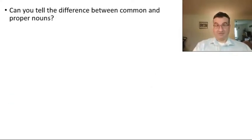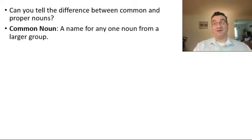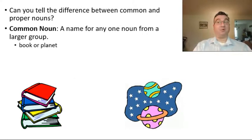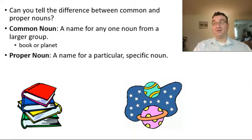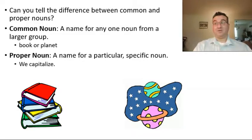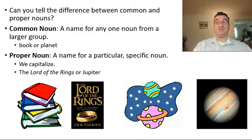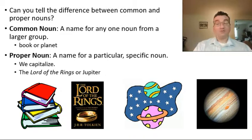Can you tell the difference between a common and a proper noun? A common noun is a name for any one noun from a larger group, so a book or a planet — it's a general term. On the other hand, a proper noun is a name for a particular, specific noun. We tend to capitalize proper nouns. So not just any book, but the Lord of the Rings. And not just any planet, but specifically Jupiter. Those are proper nouns.